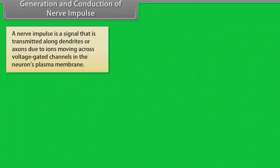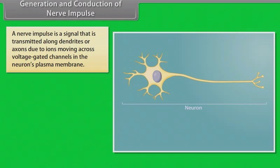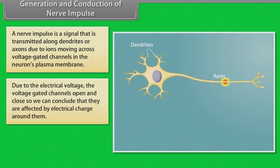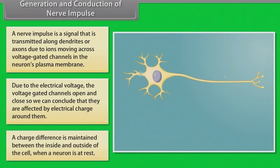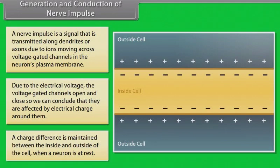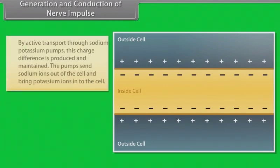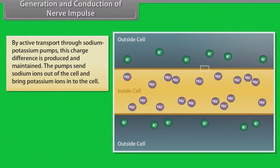A nerve impulse is a signal that is transmitted along dendrites or axons due to ions moving across voltage-gated channels in the neuron's plasma membrane. The voltage-gated channels open and close in response to the electrical charge around them. A charge difference is maintained between the inside and outside of the cell when a neuron is at rest, produced and maintained by active transport through sodium-potassium pumps.